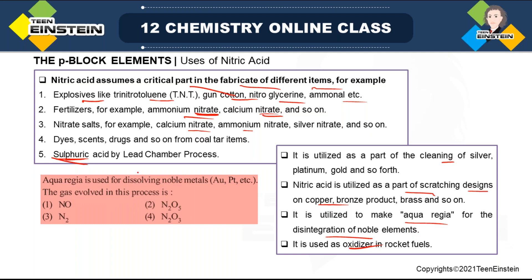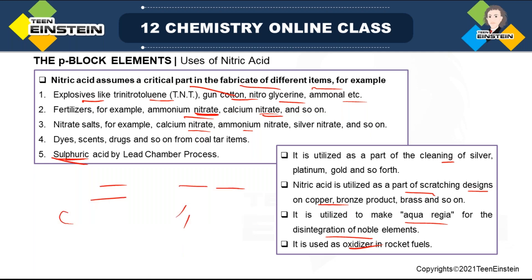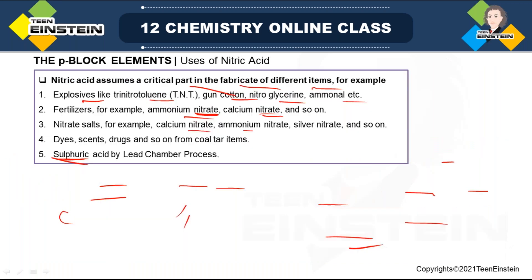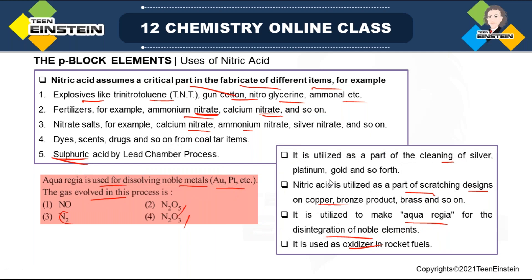Question: Aqua regia is used for dissolving noble metals — which gas evolves in this process? The options are nitric oxide, nitrogen pentoxide, N2O3, or nitrogen gas. Looking at the equations for dissolving gold and platinum in aqua regia, in both reactions nitric oxide (NO) is formed as the gas. So the correct option is option 1 — nitric oxide.